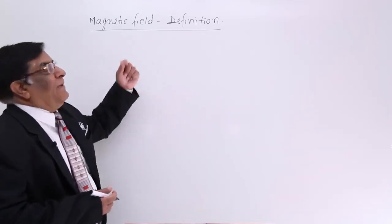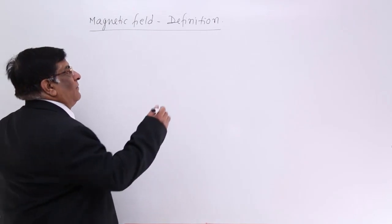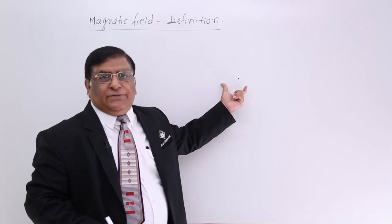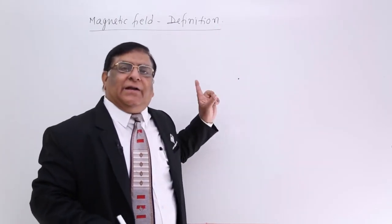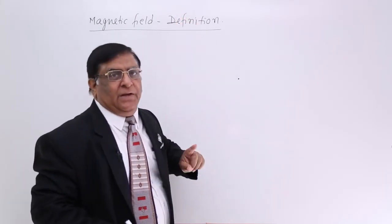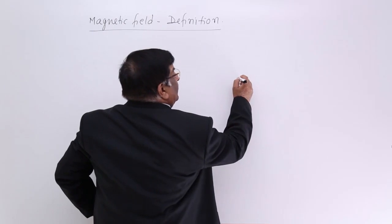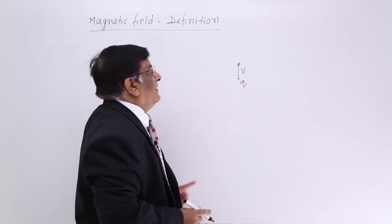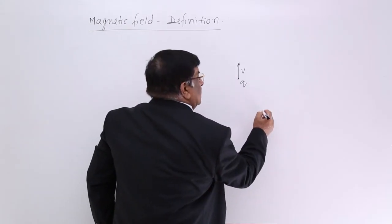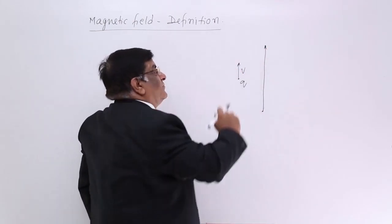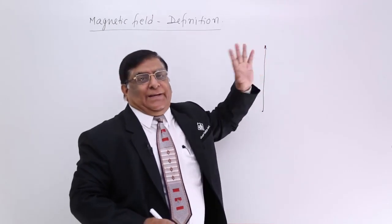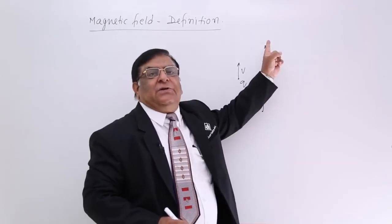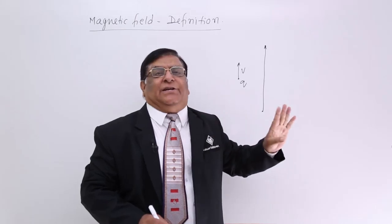We will study the definition of magnetic field. We know that a charge at any location experiences a force if there is an electric field created by another charge in the vicinity. Now if this charge q is moving with velocity v, according to the law of inertia it should keep moving in a straight line. If a force is applied on it, there can be three effects: its speed may increase, its speed may decrease, or its direction is changed.